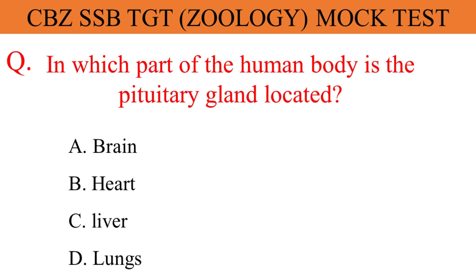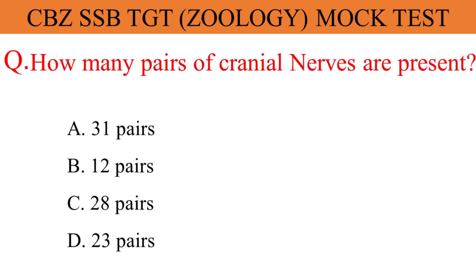In which part of the human body is the pituitary gland located? The given options are A. Brain, B. Heart, C. Liver, D. Lungs. And the correct answer is option A. Brain.